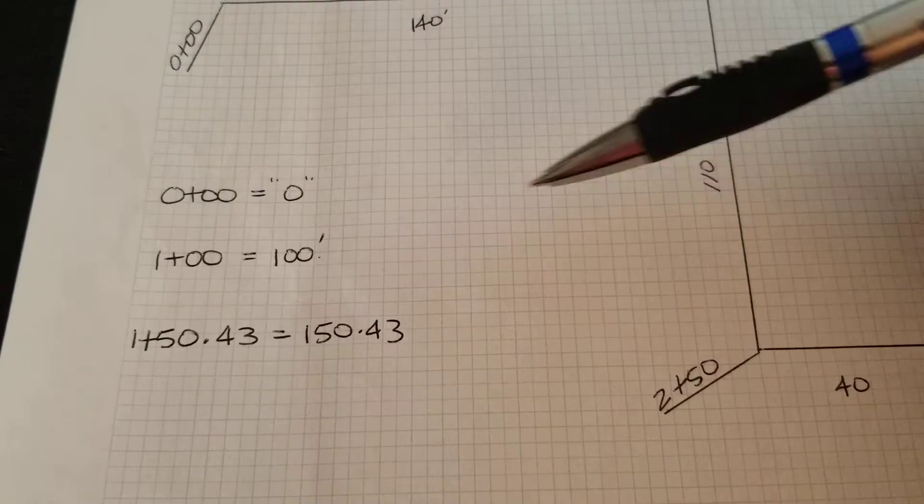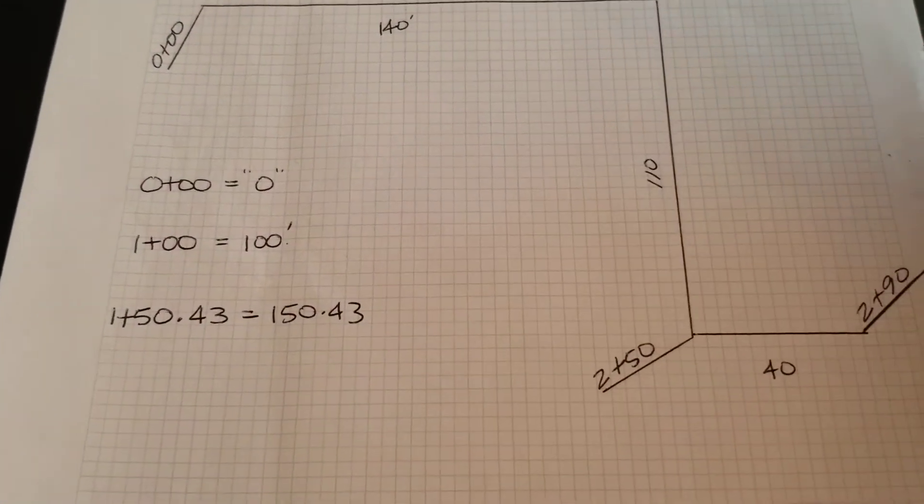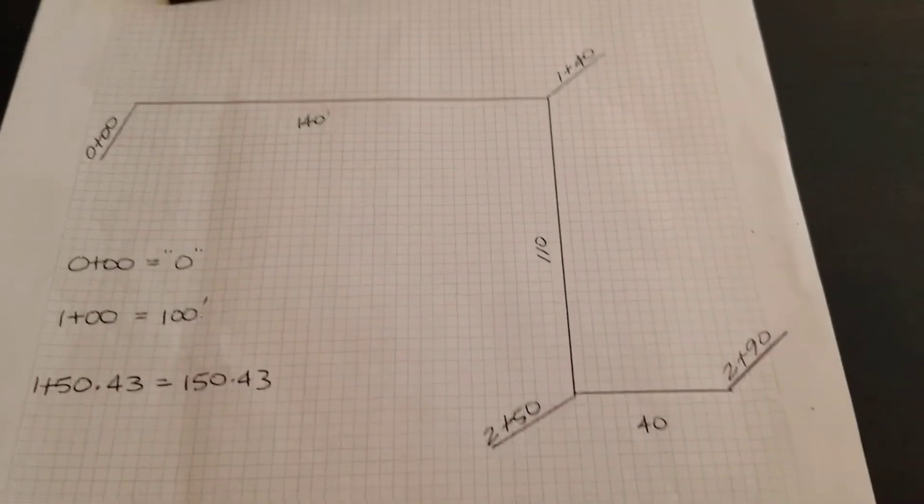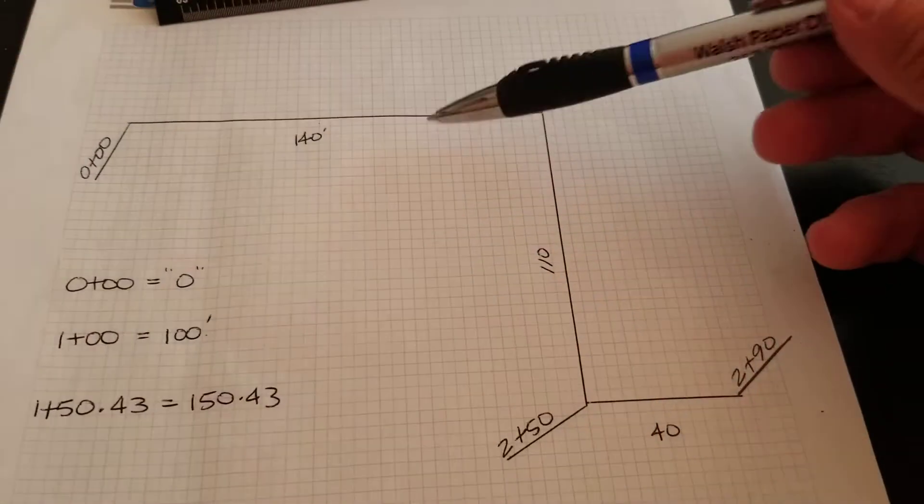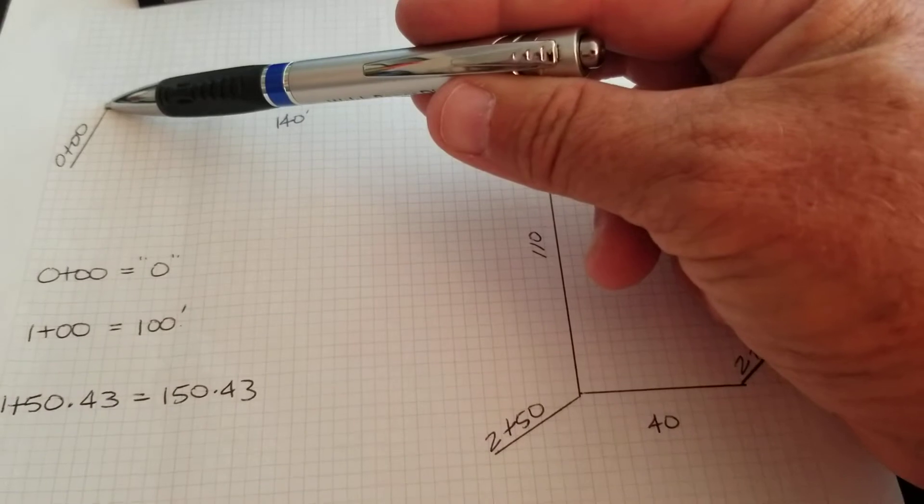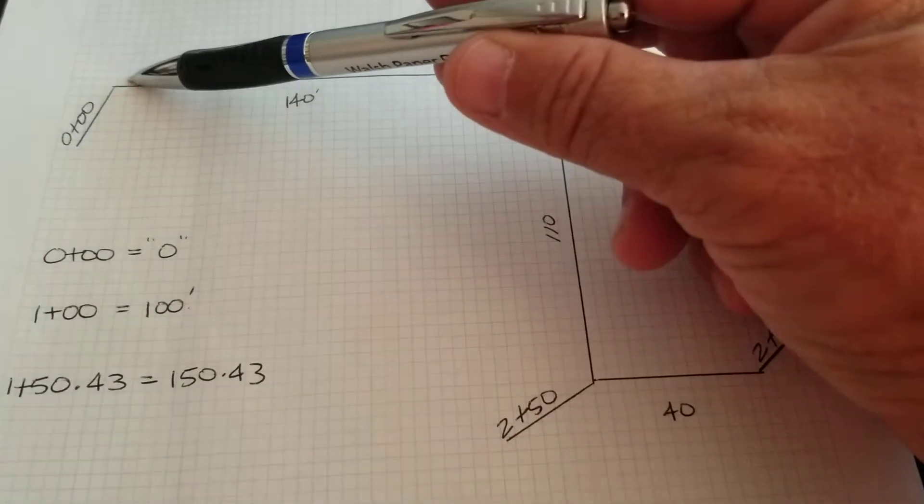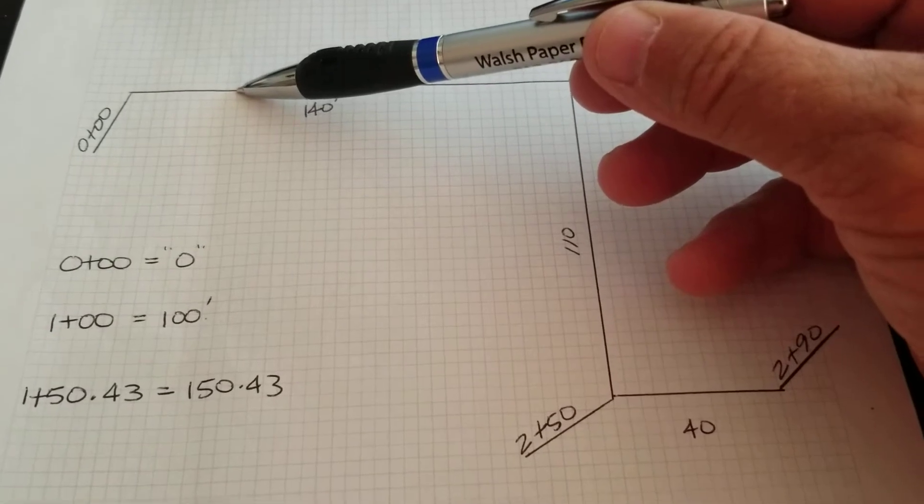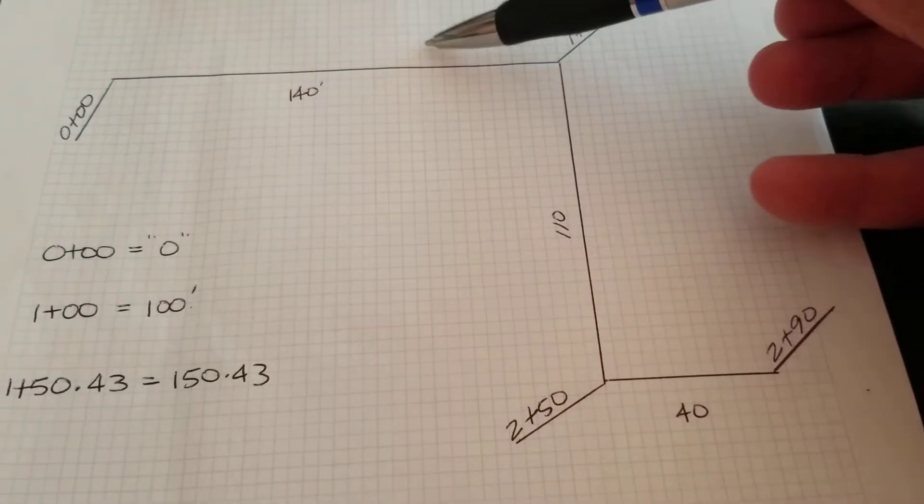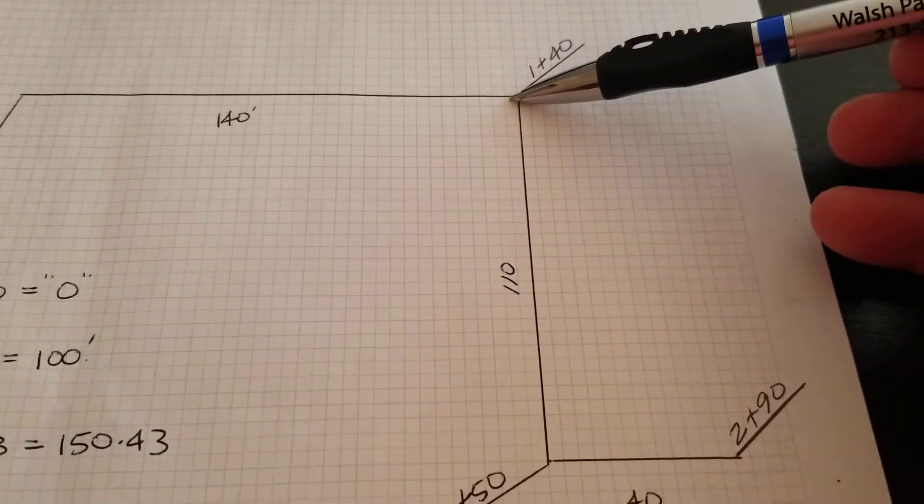And you're going to start noticing stationing along like K-rails on freeways and all over the place. And stationing is not hard. And it also works out great because if a bunch of these stakes were to fall down, as long as you have a point where you know where the stationing is, you could just measure over with your pocket tape or whatever, pace, and you can put those lath right back where they belong. You know, if you knew 1+40 was the angle point.